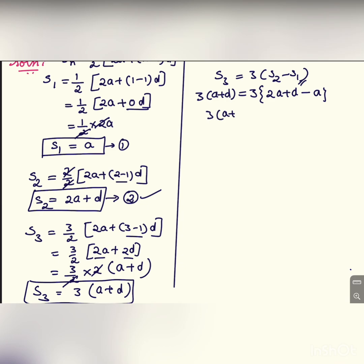Now 3 into a plus d is equal to 3 into 2a minus a is a plus d. Yes, we got the answer. LHS is equal to RHS. Hence proved.